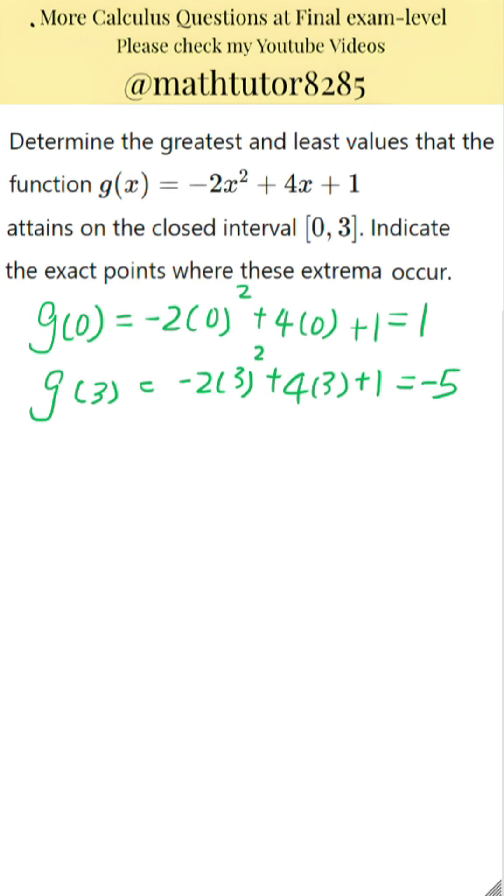Next step is to find the critical point by taking the derivative of the function and setting it equal to 0. The derivative of g of x is negative 4x plus 4. Set this equal to 0 and solve for x. Negative 4x plus 4 equals 0 means that x is equal to 1.